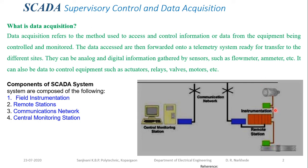Looking at the block diagram: in the field there is a motor and sensors — the green color indicates field instrumentation, which includes sensors and actuators. We have a remote station placed near the field through which certain parameters can be changed. The communication network transmits signals from field instrumentation and remote stations to the central monitoring system. This communication channel may be wired or wireless depending on requirements.